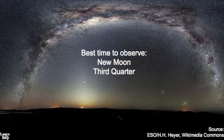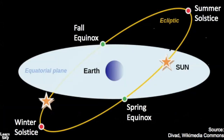The best time to observe the zodiacal light is when the moon is absent — during the new moon phase or even the third quarter phase, since the moon doesn't rise until very late in the evening. Remember, it is best to see the zodiacal light at sunset or sunrise. The zodiacal light aligns with the ecliptic, which is the path of the moon and sun — here it's highlighted in yellow. The brightness of the zodiacal light decreases with distance from the sun, which is why it's best to see this phenomenon during the equinoxes.